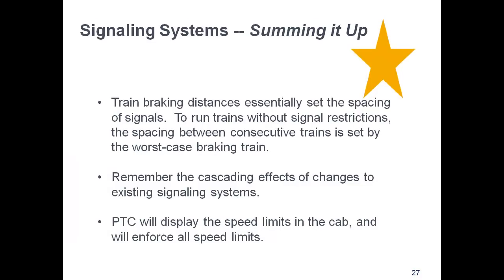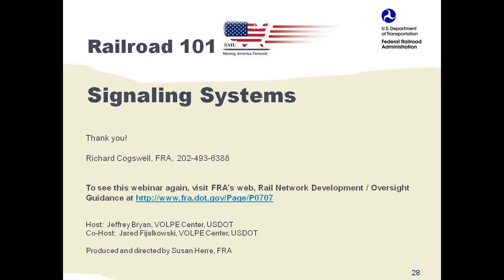That wraps up the signaling system webinar. The main messages to remember: train braking distances essentially set the spacing of signals. To run trains without signal restrictions, the spacing between consecutive trains is set by the worst-case braking train. Remember the cascading effect of signal changes to the existing signal systems. Positive train control will display the speed limits in the cab and will enforce all speed limits, both signal-induced and civil restrictions. To see this or any of the webinars, see FRA's website at fra.dot.gov, Rail Network Development slash Oversight Guidance. Thank you.